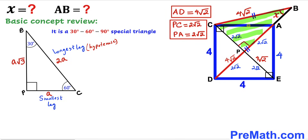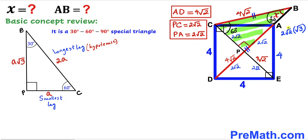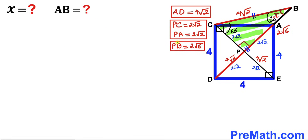Applying this to right triangle BPC: the smallest leg PC = 2√2, and the longest leg BC = 4√2, which is exactly twice PC. This confirms it is a 30-60-90 triangle, so the angle at B is 30°, the right angle is at P (90°), and the angle at C is 60°. The third leg PB = 2√2 · √3 = 2√6 units.